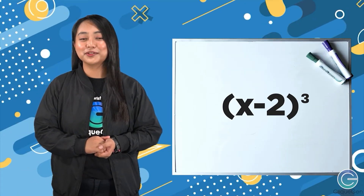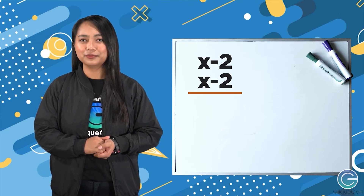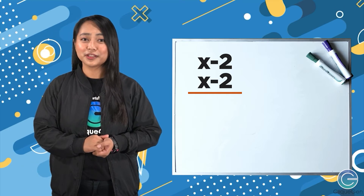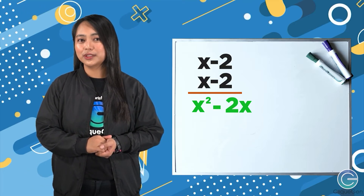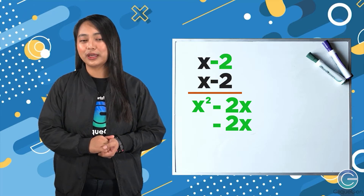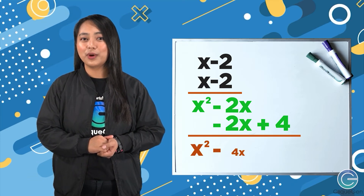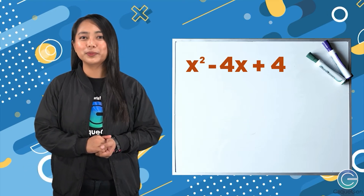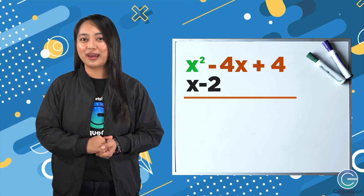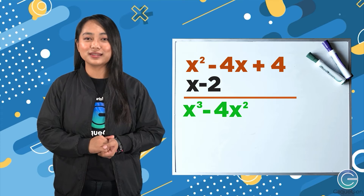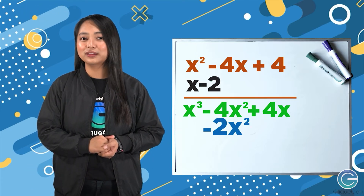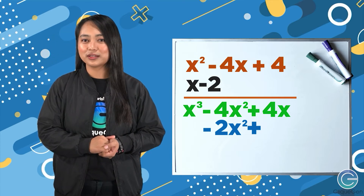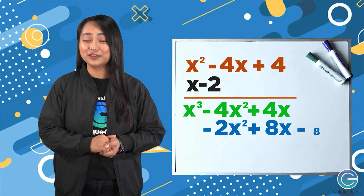Another example: what is the cube of x minus 2? So we start with x minus 2 times x minus 2 — our multiplicand is x minus 2 and the multiplier is x minus 2. x times x is x squared, x times negative 2 is negative 2x, giving x squared minus 4x plus 4. After that we multiply by another x minus 2: x times x squared is x cubed, x times negative 4x is negative 4x squared, x times 4 is positive 4x, and negative 2 times x squared is negative 2x squared.